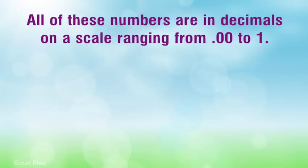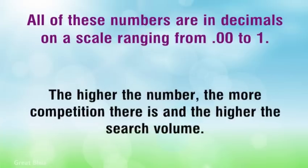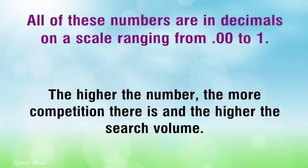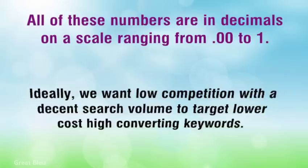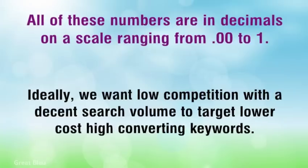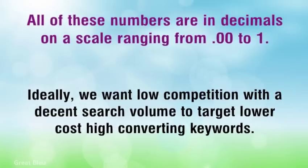All of these numbers are in decimals on a scale ranging from .00 to 1. The higher the number, the more competition there is and the higher the search volume. Ideally, we want low competition with a decent search volume to target lower cost, high converting keywords.